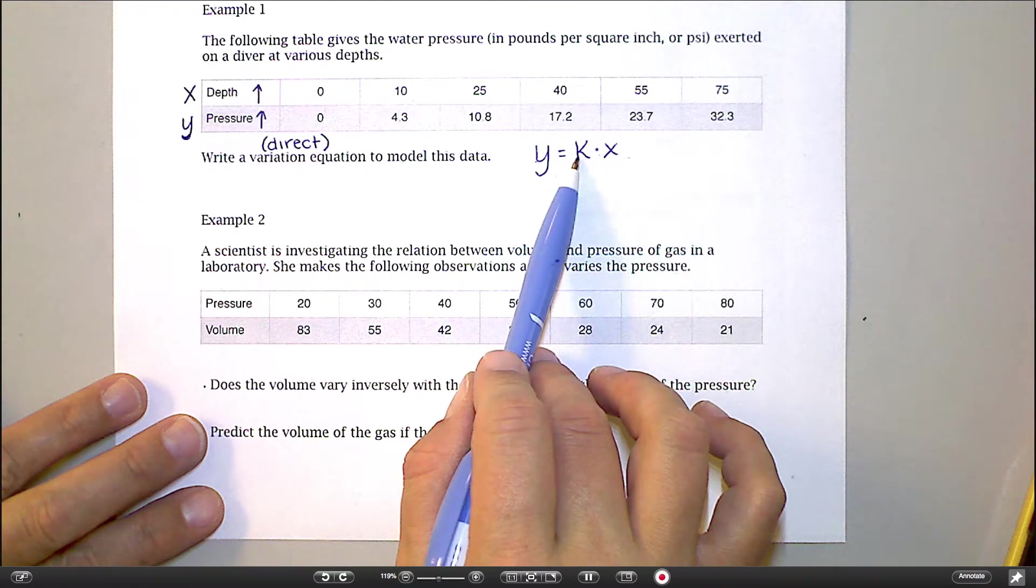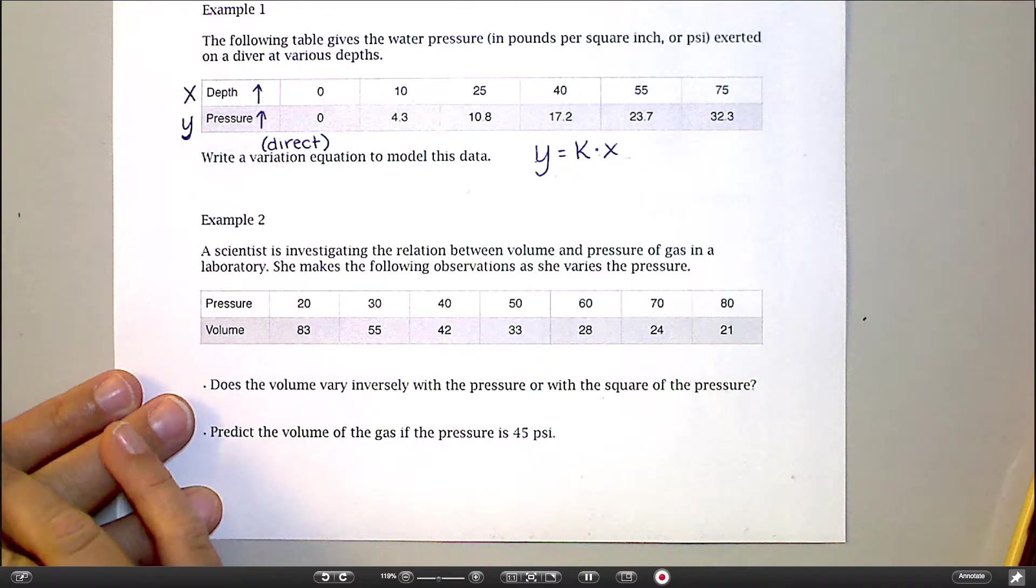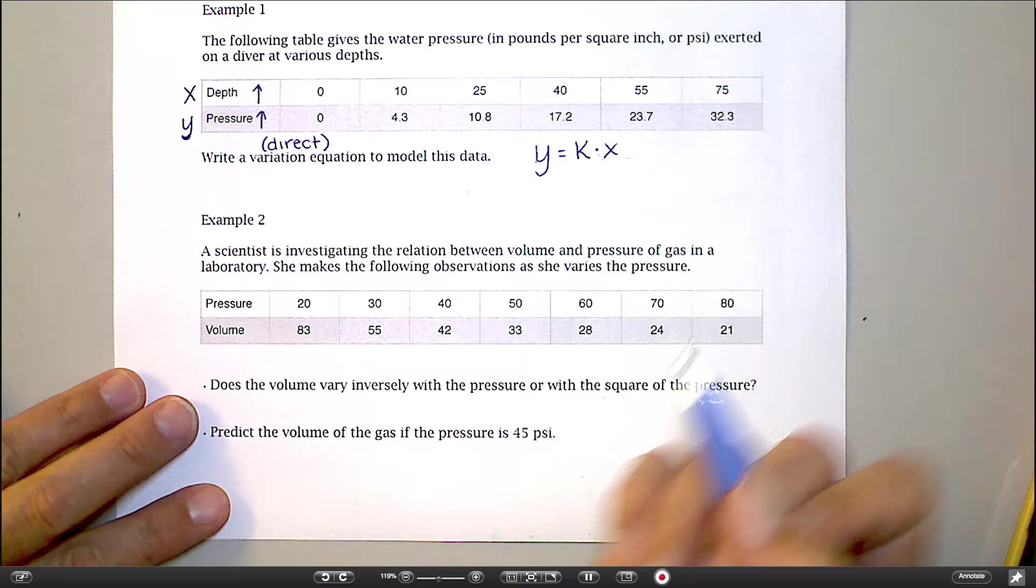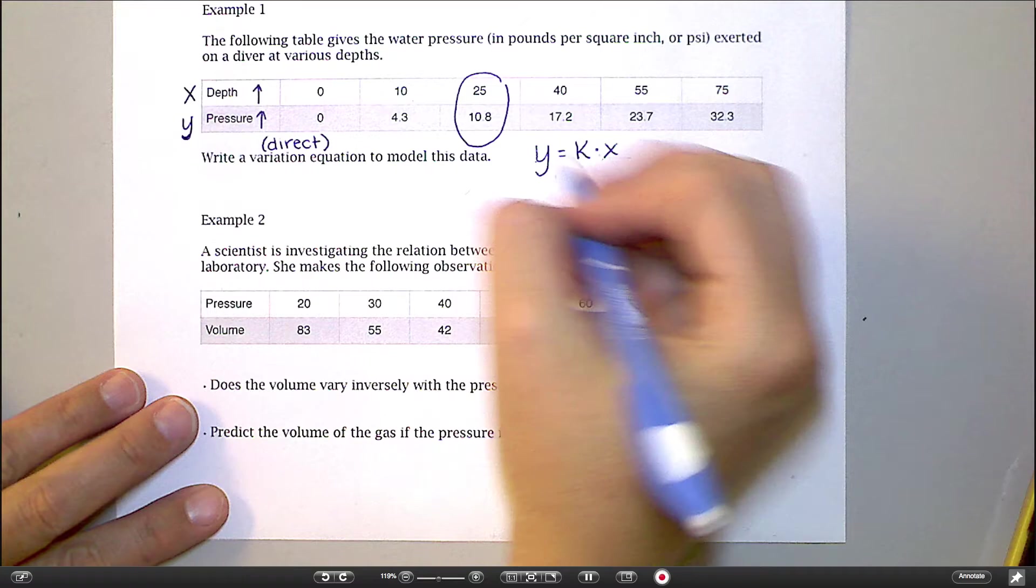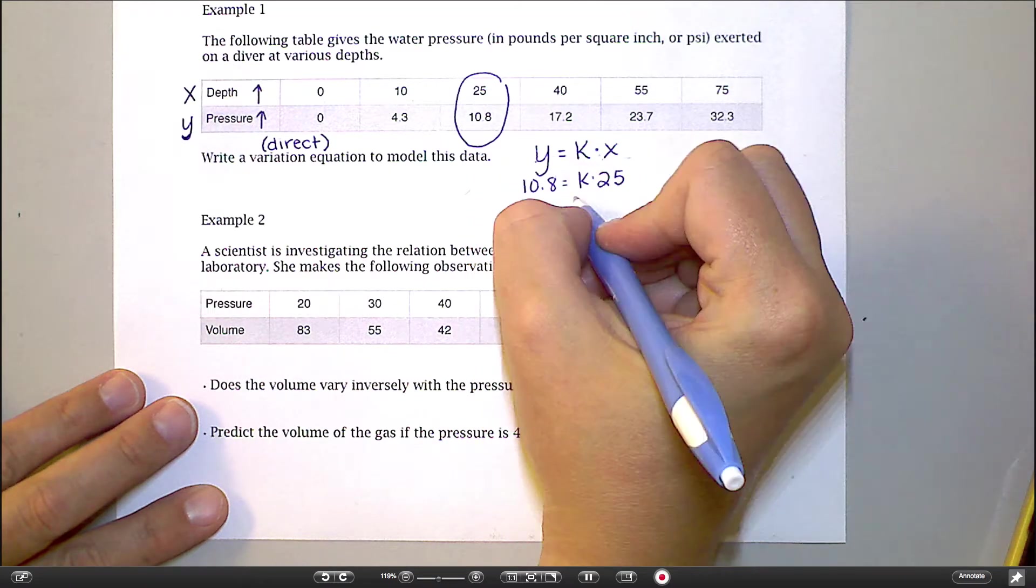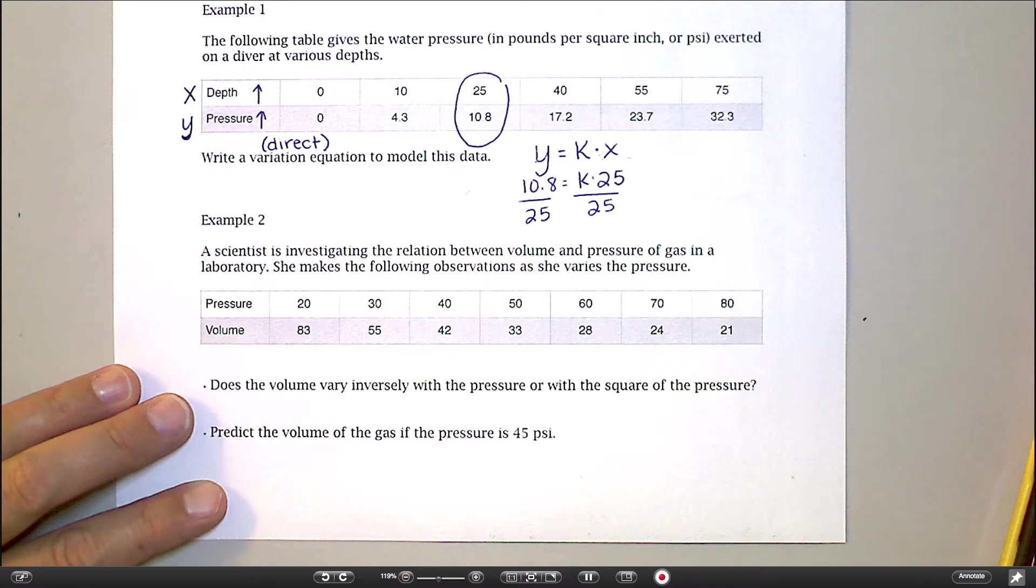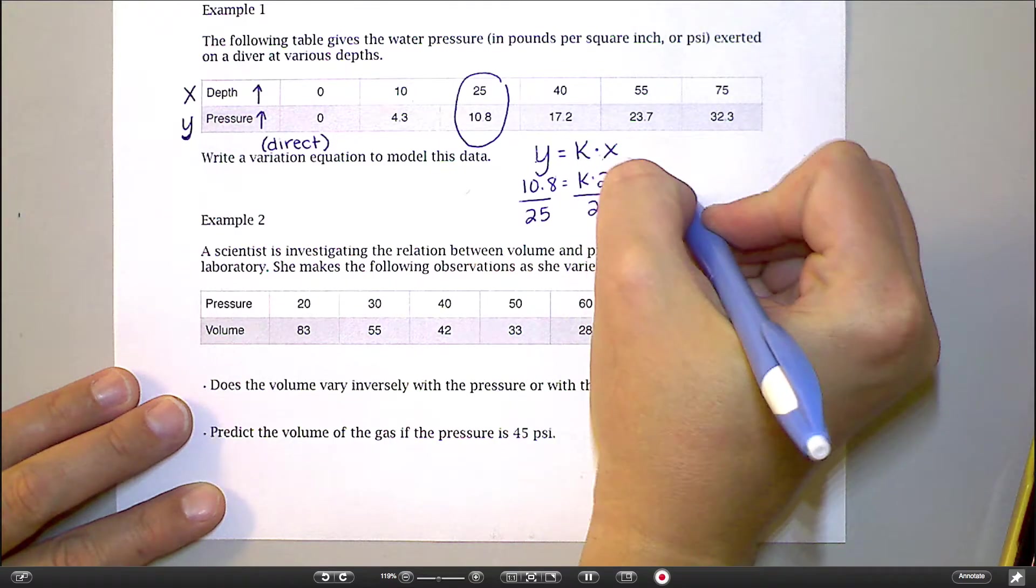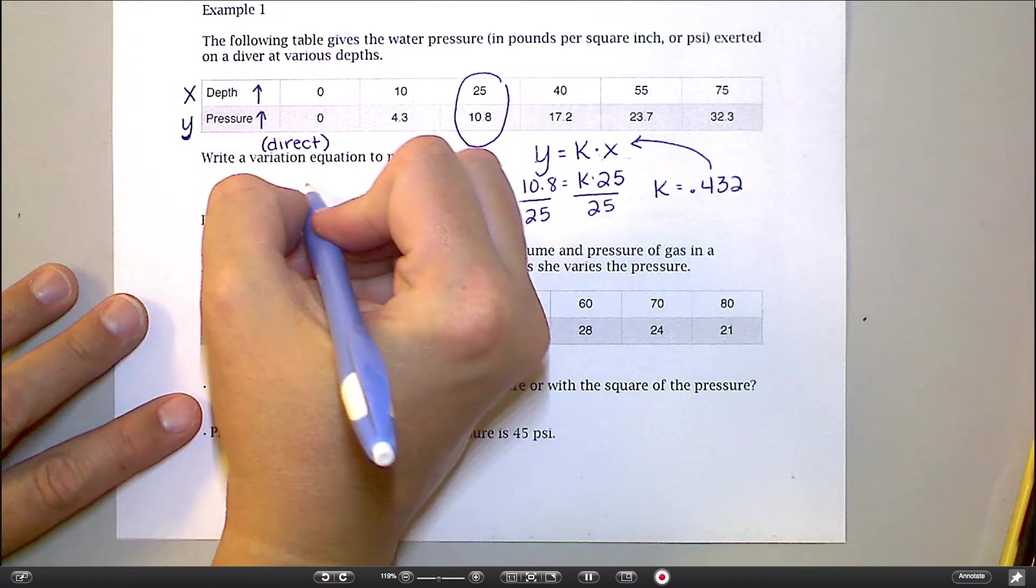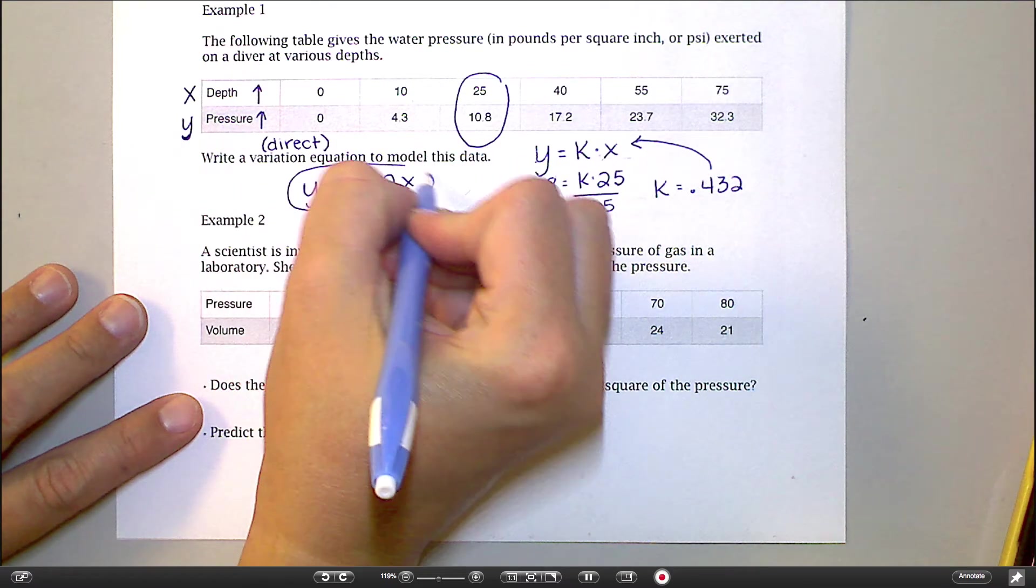And then what I can do to find my K value is just pick any one of these points. Usually these problems give you one set of numbers. You have a whole table full of numbers that works. So I'm going to choose one pair. Now I would not choose zero, zero, right? Because that's not going to get us any good information. If we put zero here and zero here, we're not going to get a K value. But pick any other one you want. I'm going to go with 25 and 10.8. So 25 is my X, 10.8 is my Y. Here's my K. And now I'm going to divide by 25. And let's see. 10.8 divided by 25 is 0.432. And so then my overall variation equation, if I plug that back into this, would look like Y equals 0.432X. And this is my answer to the problem.